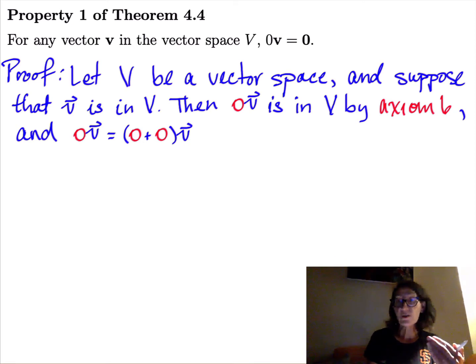Okay, so now we can start using some of the axioms. We're going to use the distributive property to break that up into 0 times v plus 0 times v. That's one of the distributive properties. It's axiom 8.